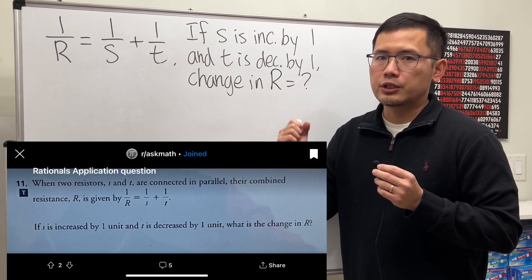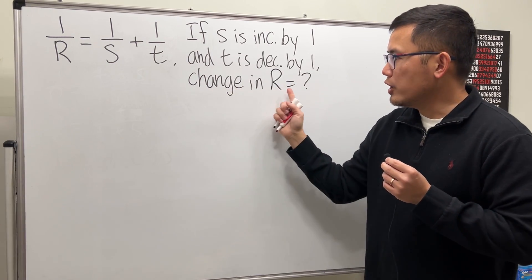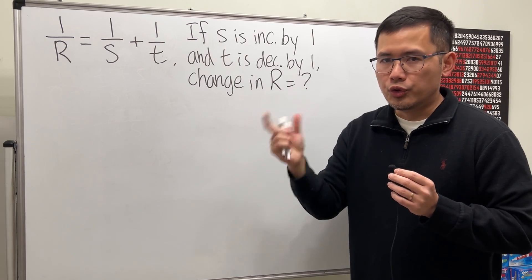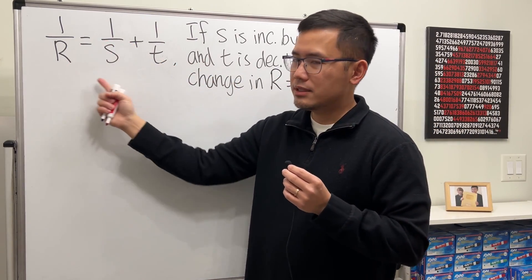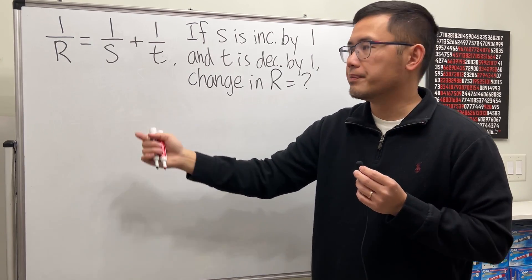The question asks: if S is increased by one unit and T is decreased by one unit, what is the change in R? To find the change in R, it's always going to be the new minus the old. But before we can do that, let's isolate R from this equation first.